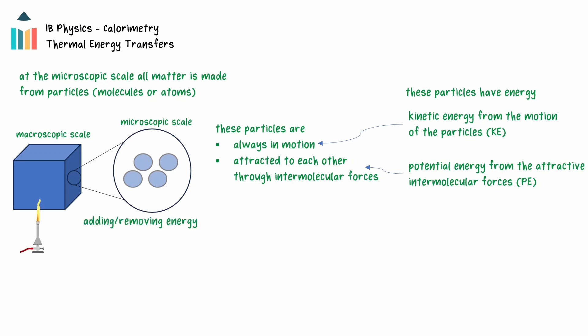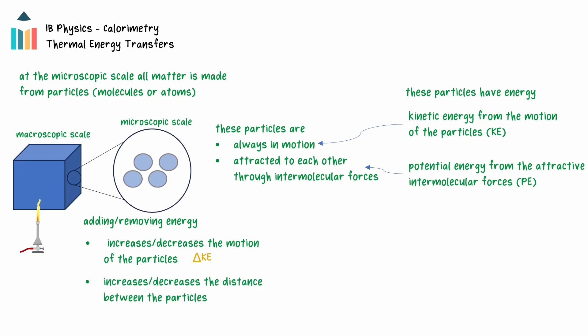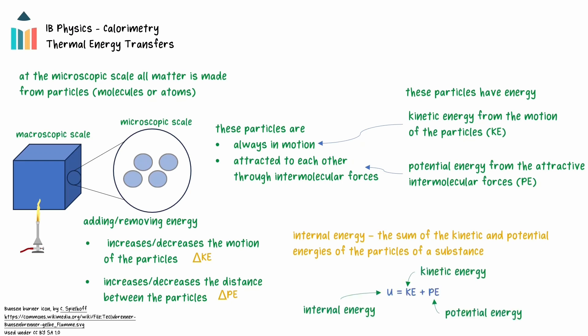Adding or removing energy can increase or decrease the amount of motion the particles have, affecting the kinetic energy. It can also change the distance between the particles, affecting the potential energy. The internal energy of a substance, which is given the symbol capital U, is the sum of the kinetic and potential energy of the molecules of the substance.